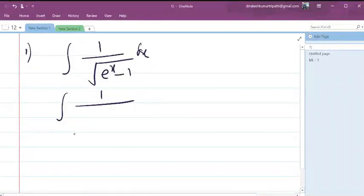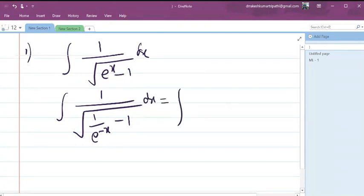We shall write e to the power x as 1 upon e to the power minus x minus 1, which we can write as 1 upon under root of 1 minus e to the power minus x whole upon e to the power minus x dx.